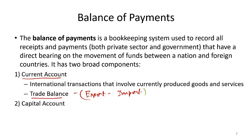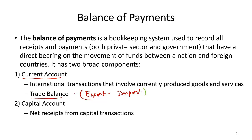The second component is the capital account, which represents net receipts from capital transactions — essentially the buying and selling of assets. Anytime foreigners come and build a factory here in the form of foreign direct investment, that's part of the capital account. Similarly, anytime U.S. companies or residents go outside and buy assets in another country, that also becomes part of the capital account. Importantly, the current account and capital account together account for the net change in government international reserves.